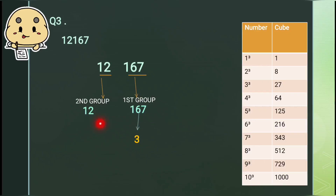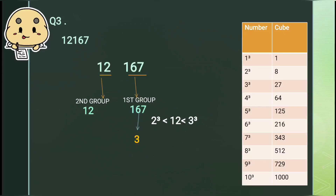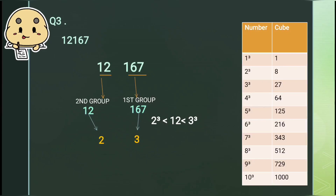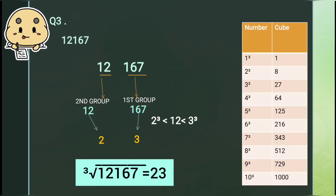Now in the second group we have 12. We know that 2 cubed is 8 and 3 cubed is 27. So 2 cubed is smaller than 12 and 3 cubed is greater than 12. We will take the smaller one, so the tens digit of the cube root of 12167 is 2. Therefore the cube root of 12167 is 23.